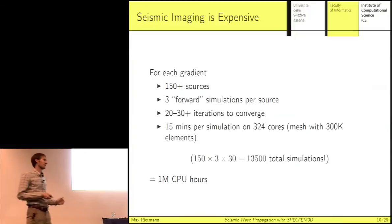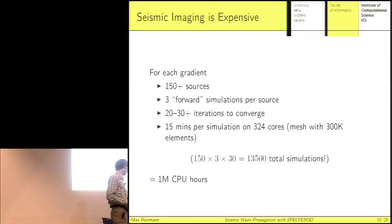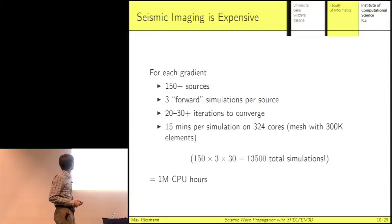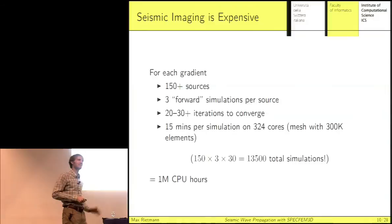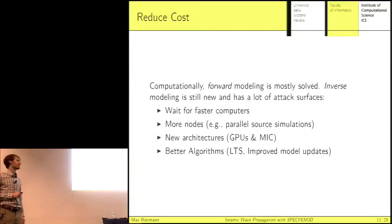The final model we get doesn't contain any error bars — there's no statistics, no confidence intervals. We just have one model that is maybe correct, but we're not 100% sure. It would be nice to do some statistics, but even if it takes one million CPU hours to get a small model, statistics might require 100 models, so you're already at 100 million CPU hours — and this is a relatively small problem. One of the bigger professors at Princeton is looking at Earth-scale stuff, talking about 1,500 to 15,000 sources, with an INCITE grant for around 400 million CPU hours on Titan.